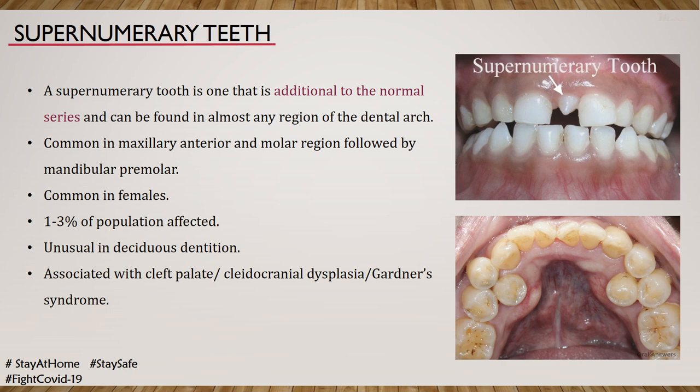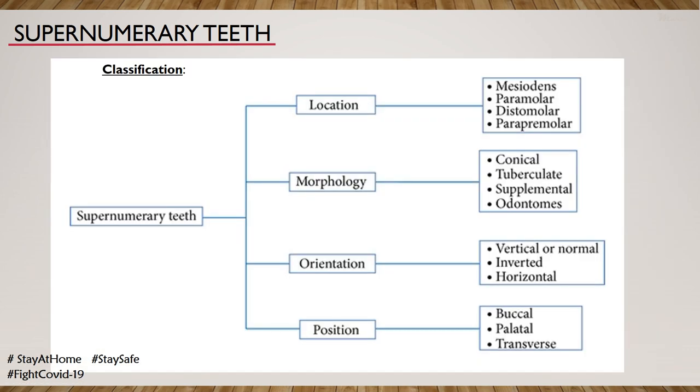Moving on to supernumerary teeth. A supernumerary tooth is one that is additional to the normal series and can be found in almost any region of the dental arch. They are common in the maxillary anterior and molar region, followed by the mandibular premolar region, affecting 1–3% of the population. They are more commonly seen in the permanent dentition and are usually associated with cleft palate, cleidocranial dysplasia or Gardner's syndrome. Supernumerary teeth can be classified based on location as mesodense, paramolar, distomolar and parapremolar; on morphology as conical, tuberculate, supplemental and odontomes; and on orientation and position.